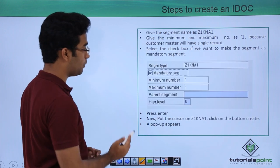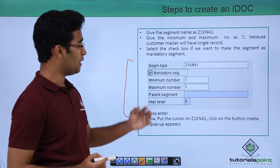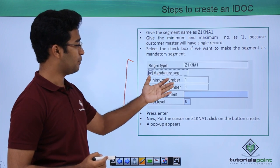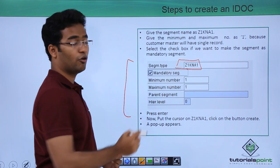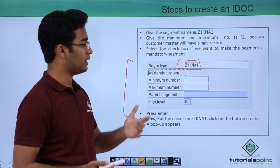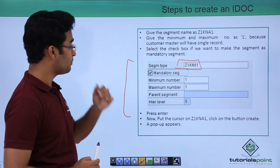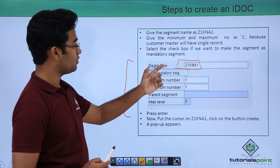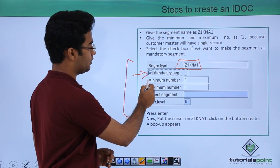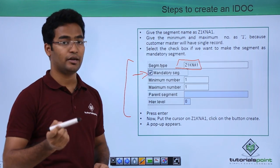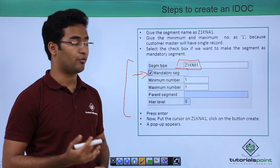A pop-up appears. Here we have to provide our segment type, which is Z1KNA1 — the first segment we have created. We can select the checkbox if we want the segment to be mandatory. We have to select it and if we want to make it mandatory, we have to do it.